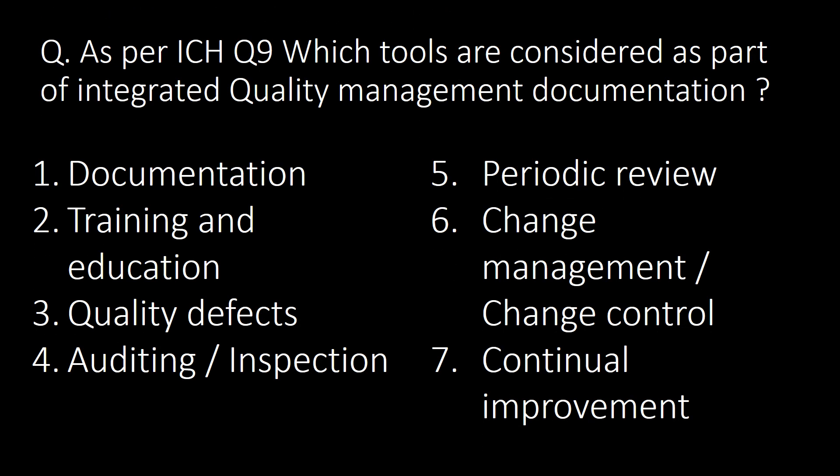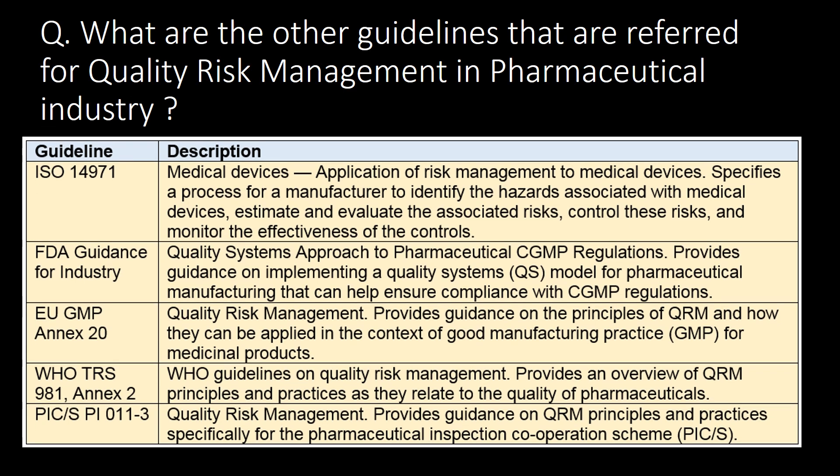As per ICH Q9, which tools are considered as part of integrated quality management documentation? There is a list of seven QMS tools that should be considered as part of integrated quality management documentation. The last and very important question: what are the other guidelines that are referred to for quality risk management in the pharmaceutical industry?